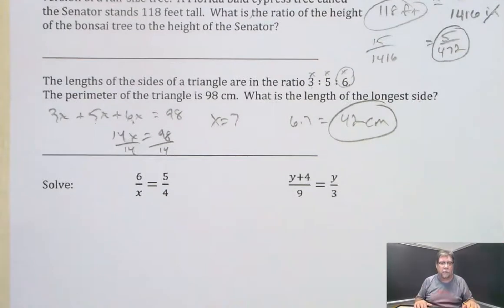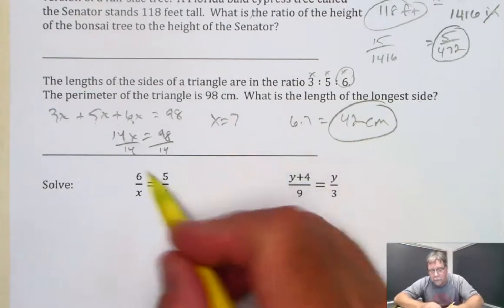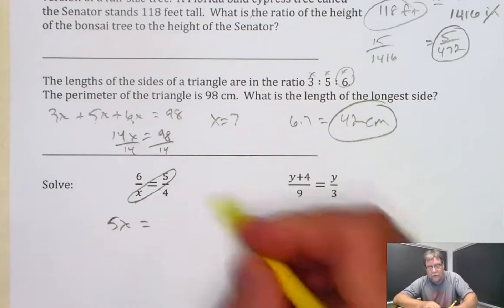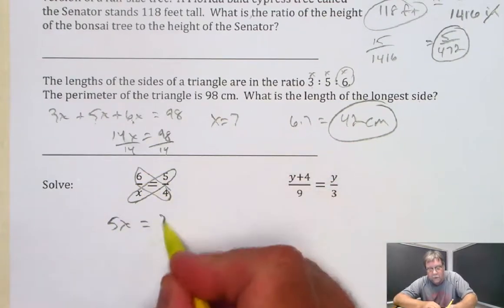Lastly, just a couple of cross multiplication problems. We will simply take x times 5, and we write it as 5x, equals 6 times 4, which is 24.